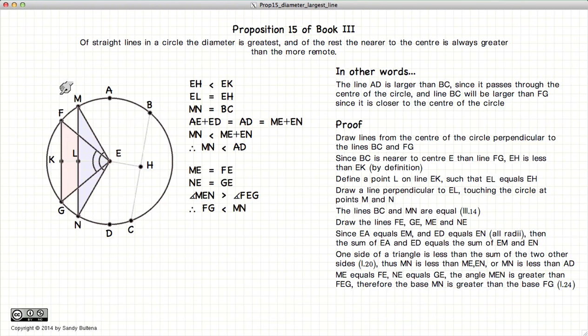Now, if we look at these two triangles, we have ME is equal to EF, EN is equal to EG, again because they're all radii. We have this angle here, MEN is larger than FEG.